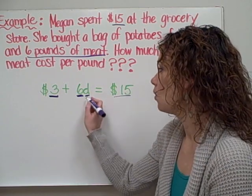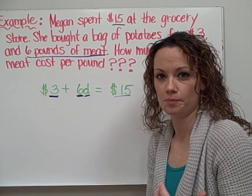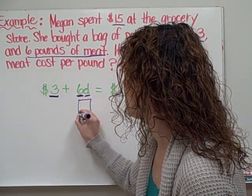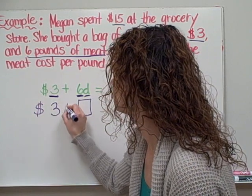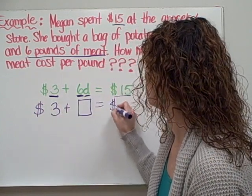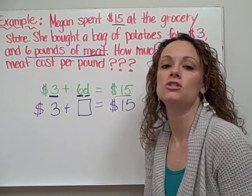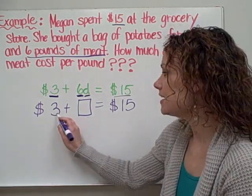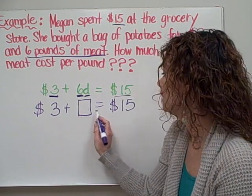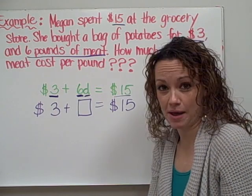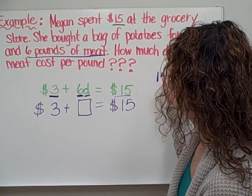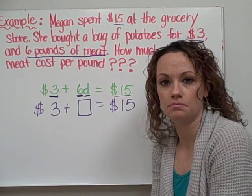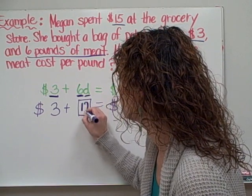So here I have $3 for the potatoes plus 6 pounds of meat at a certain price per pound equaling $15 altogether. I need to figure out what D represents — how much the meat costs per pound. I'm going to use reverse operations. Using fact families for subtraction and addition, if I take $15 and subtract $3, I find that the meat must have cost $12 altogether.